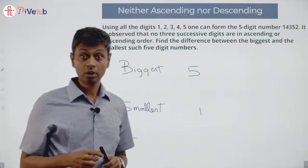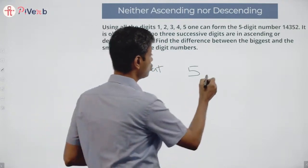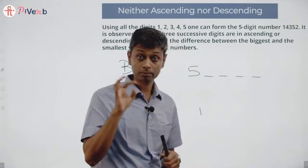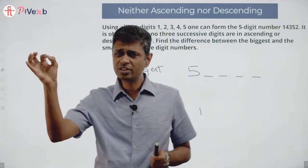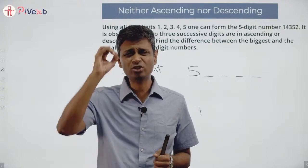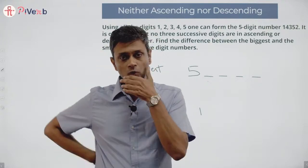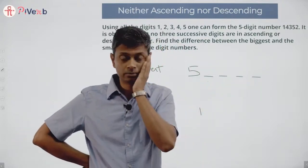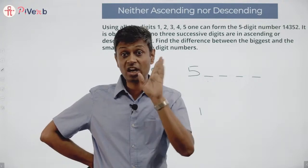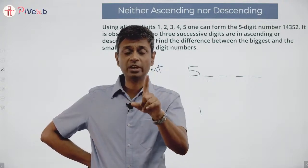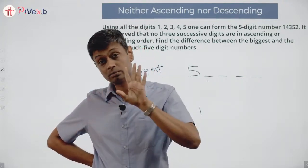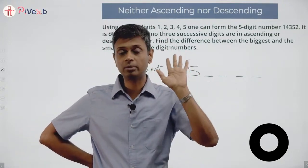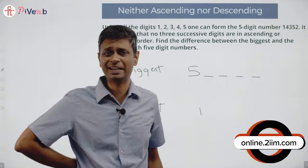If I put 5, 4 as the first two digits, the third digit must be less than 4. That means 5-4-something will be in descending order — I'm in trouble immediately. So I cannot start with 5-4. The moment I start with 5, I must make sure the second digit is not 4, otherwise the first three will be in descending order.